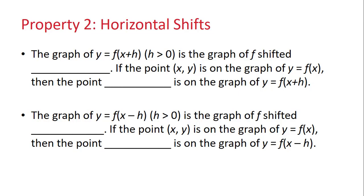Let's summarize: the graph of y = f(x+h), where h > 0, is the graph of F shifted left h units. So if the point (x, y) is on the graph of f, then the point (x-h, y) is on the graph of y = f(x+h). Conversely, the graph of y = f(x-h) is the graph of F shifted right h units. If the point (x, y) is on the graph of y = f(x), then the point (x+h, y) is on the graph of f(x-h).